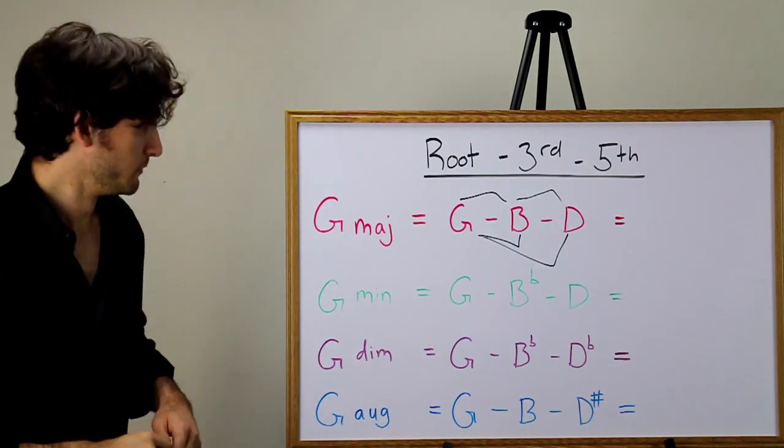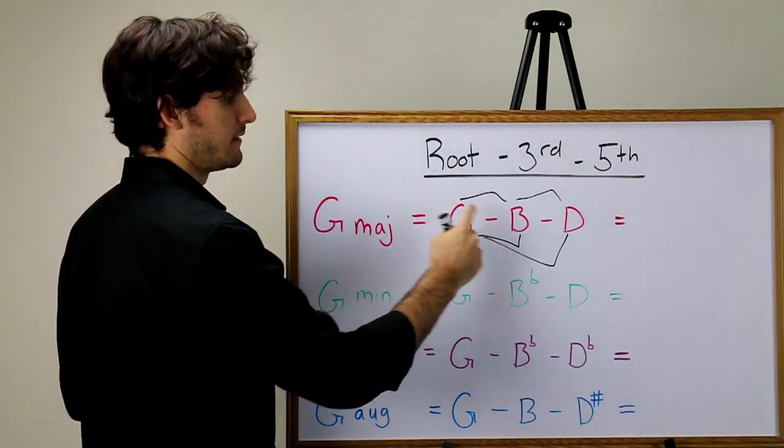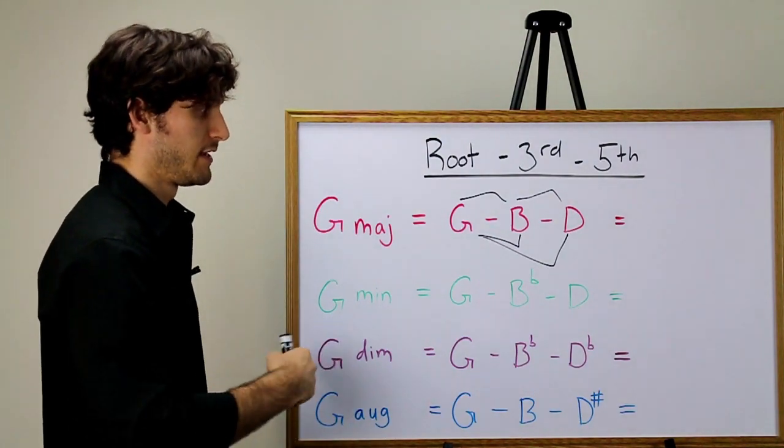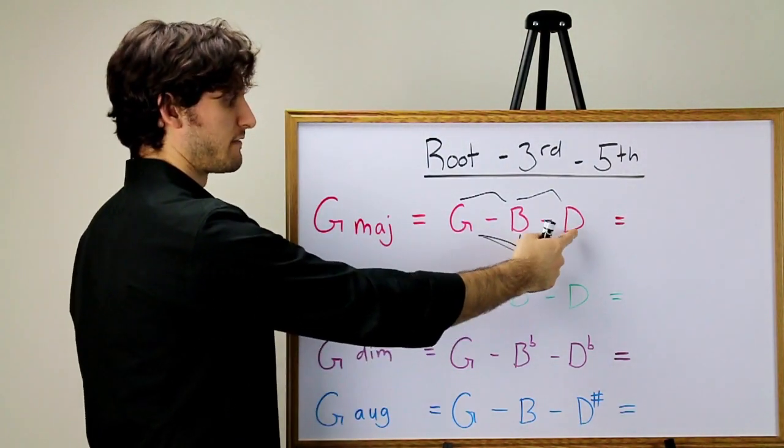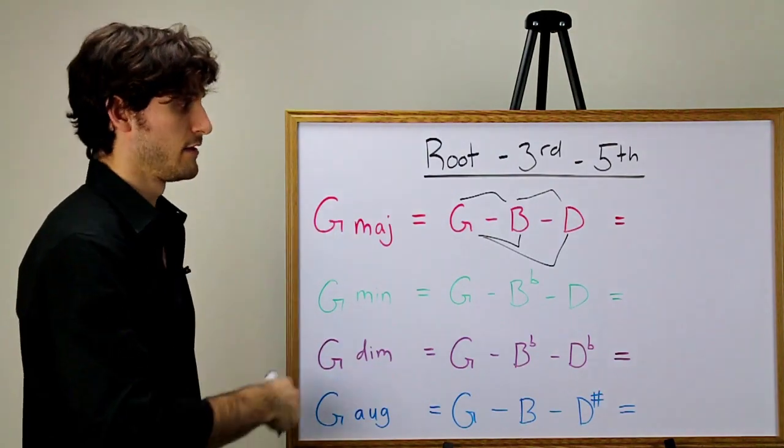So G is our root. And B, being a major third away from G, is our third. And D, being a perfect fifth away from G, is our fifth, or our five.